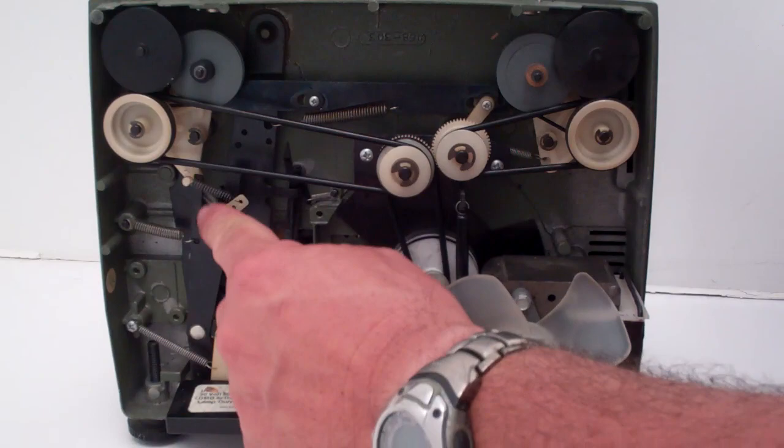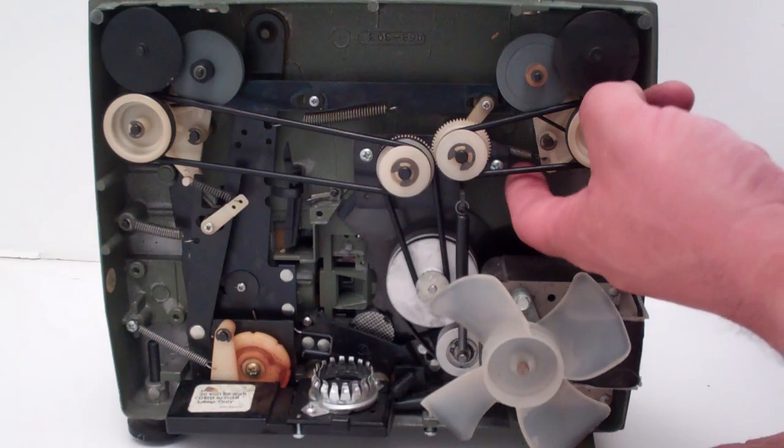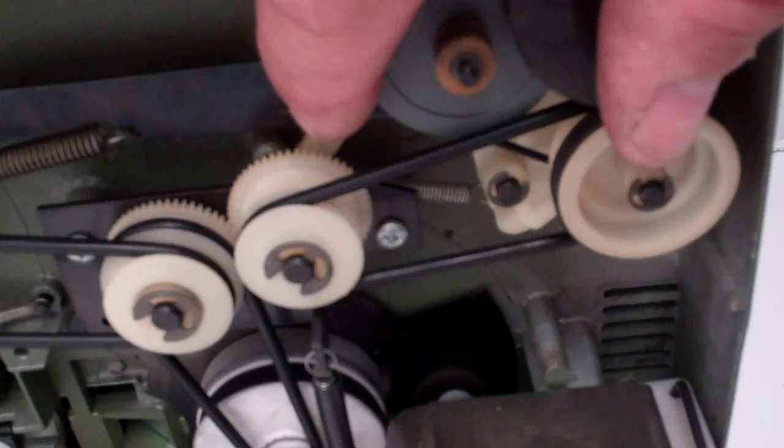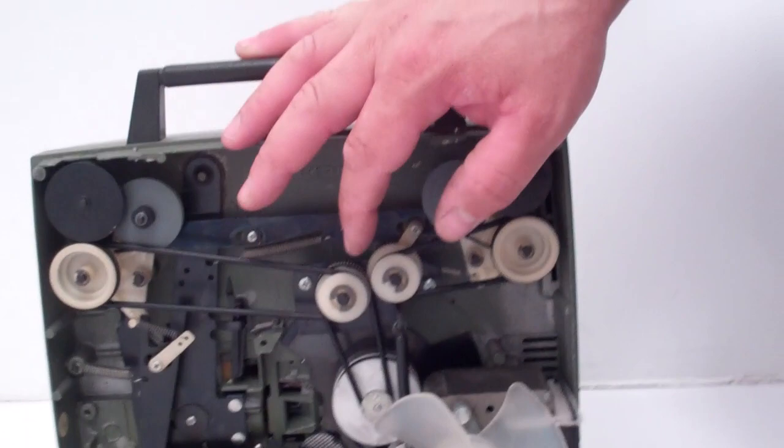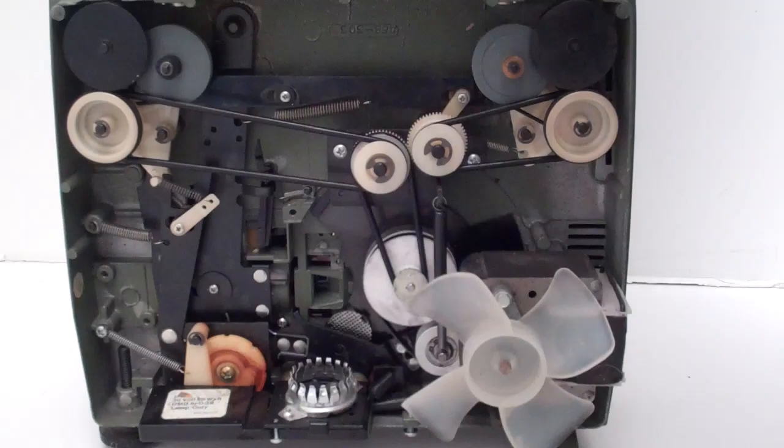Now sometimes you might have to adjust the tension on the take up reel, which actually is back here on the little white thing. You can adjust the tension on that spring. So if it's pulling the film a little bit too hard on play, you can loosen the tension on that.